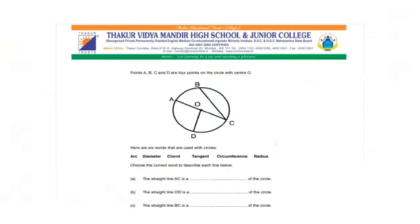Let's do the revision, students. Observe the diagram carefully — six parts are given to fill in the blanks. First, AC is a diameter of the circle. OD is a radius of the circle. And BC is a chord of the circle. Good students, keep learning!